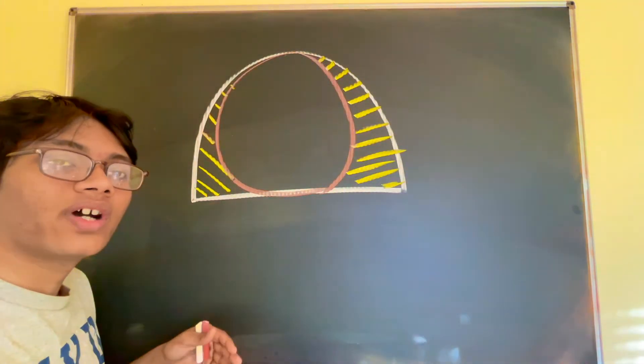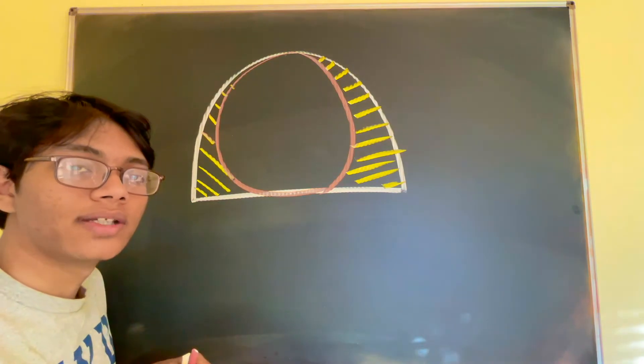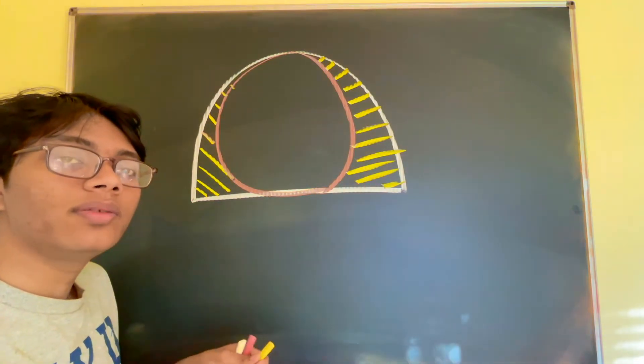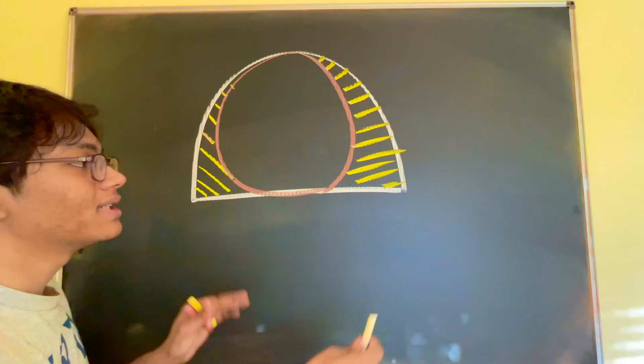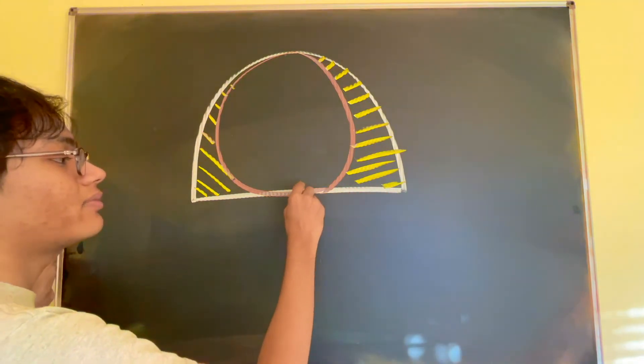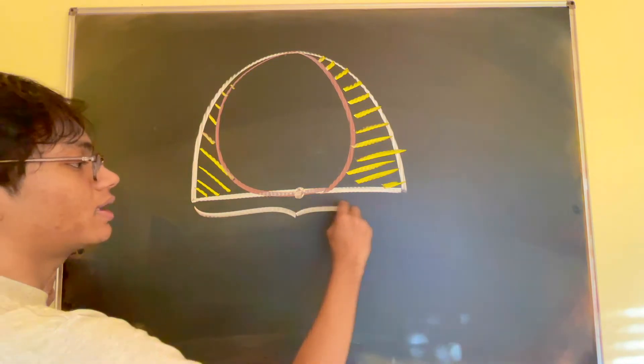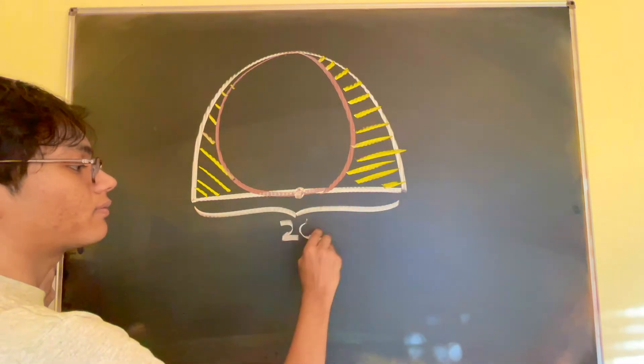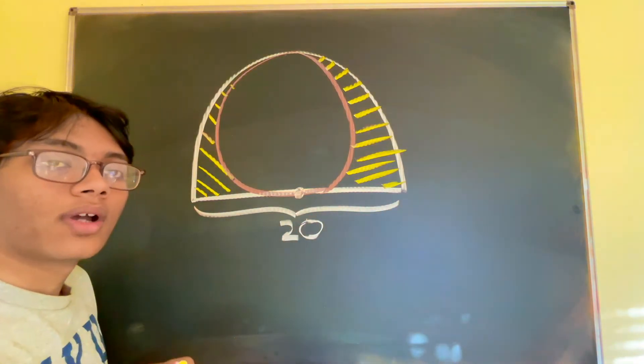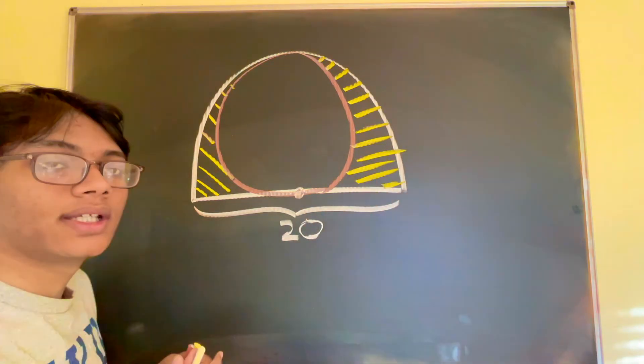We must find the area of the shaded region which is shown in yellow. The only piece of information we're given is that the length of this semicircle is 20. So this right here is 20. So how do we figure out the shaded area?